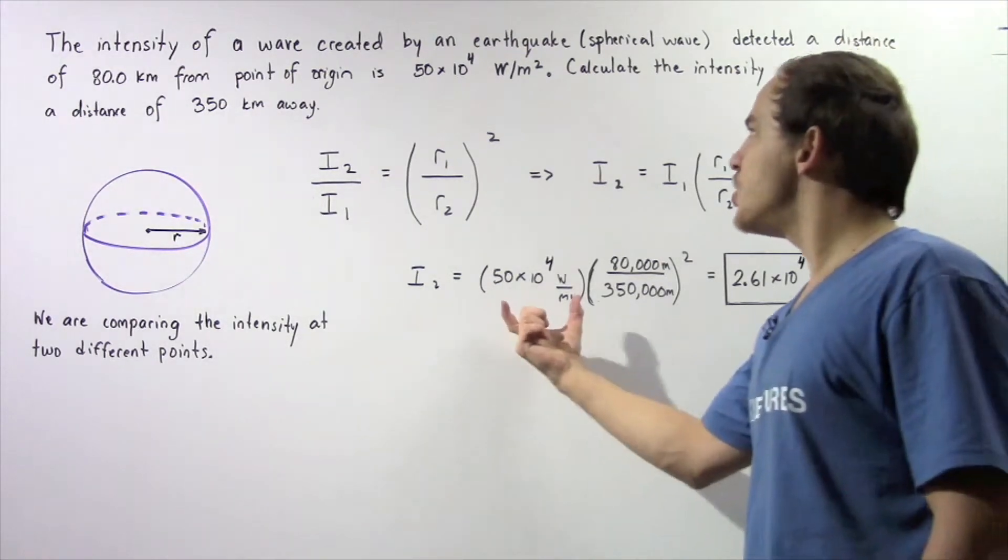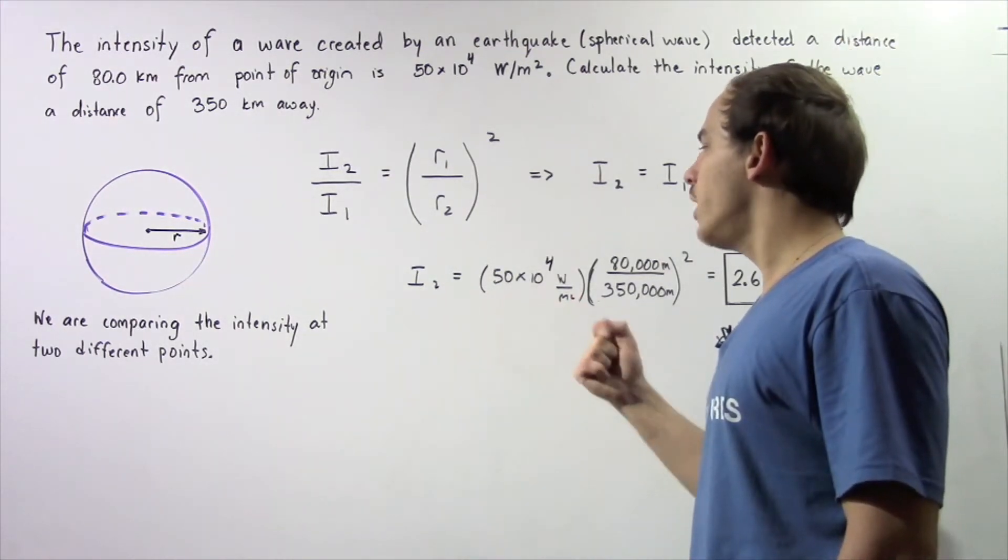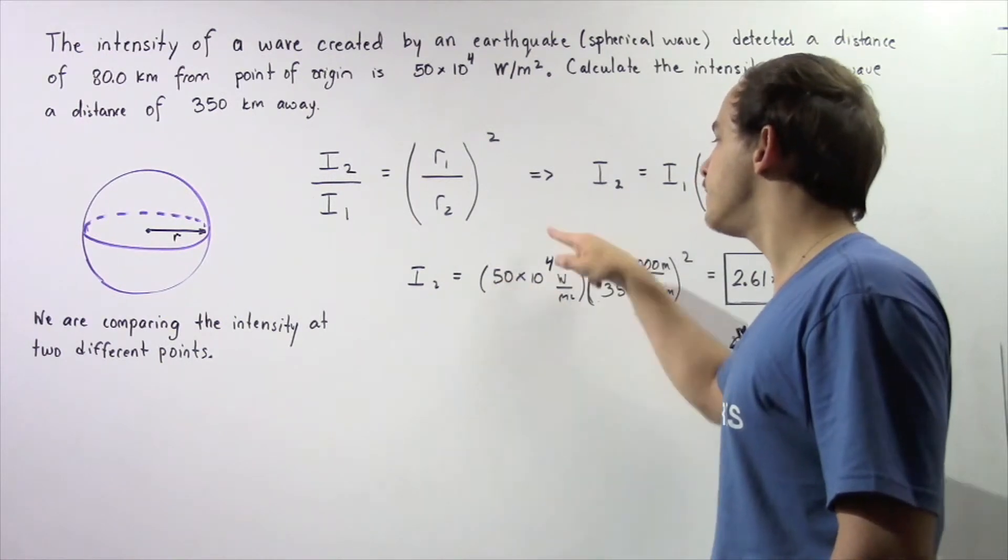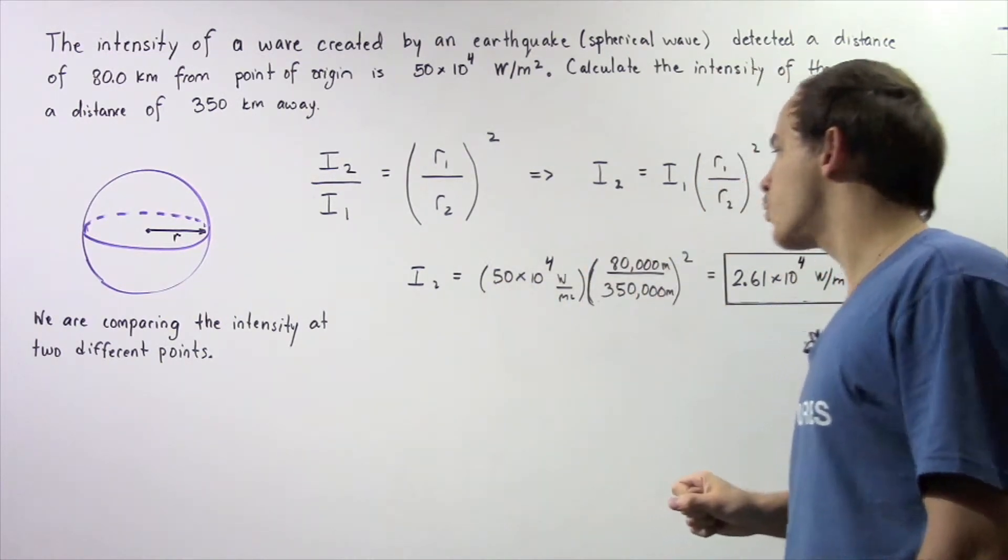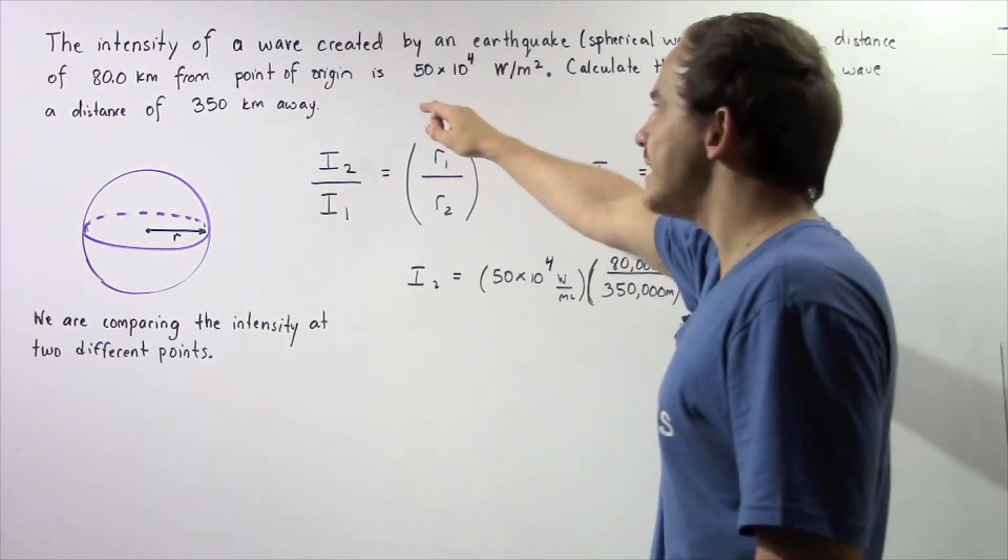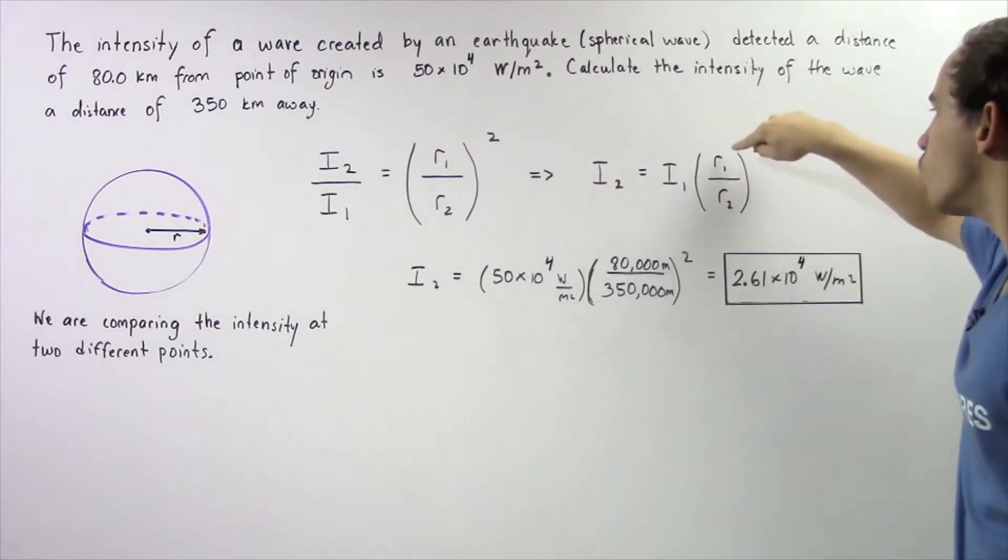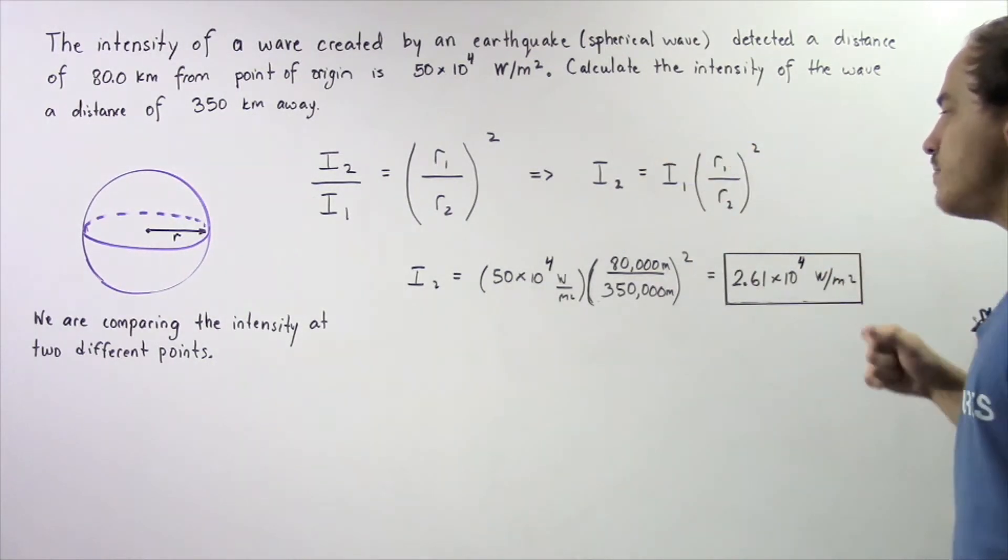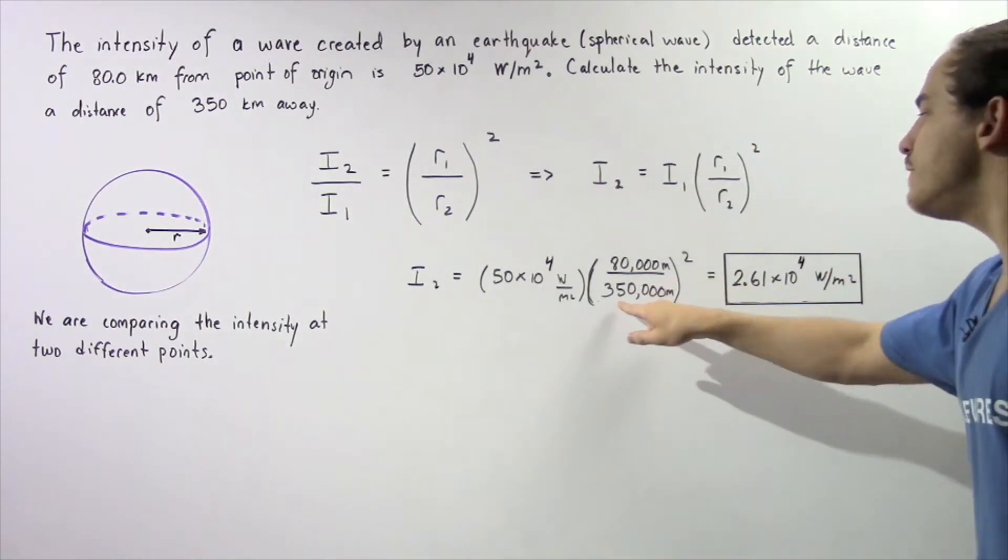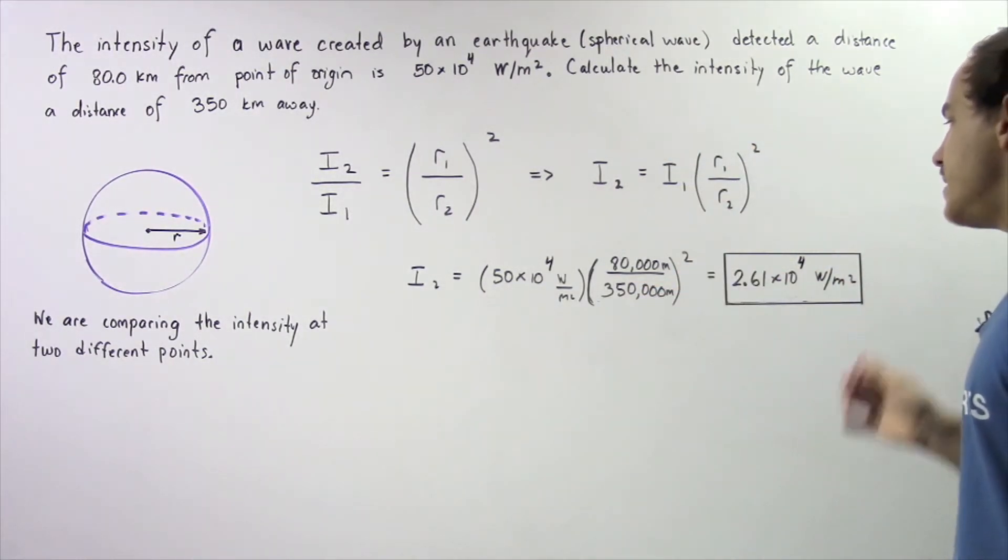So once again, we know what our intensity at position 1 is. It's 50 times 10 to the 4 watts per meter squared. And we need to convert our radii from kilometers to meters. So we have our R1 is 80,000 meters and R2 is 350,000 meters.